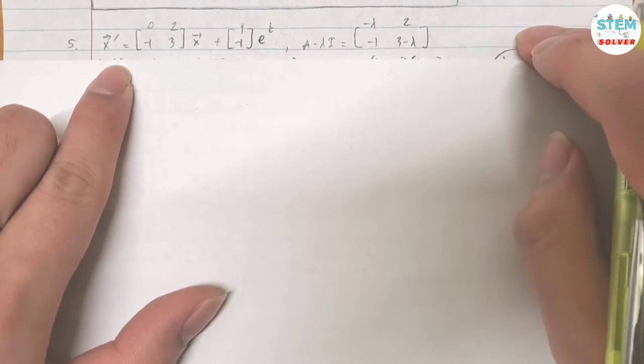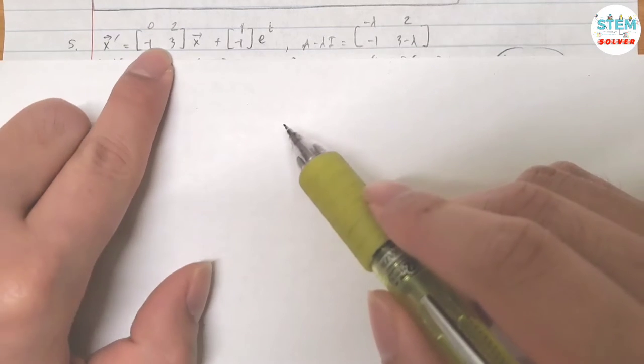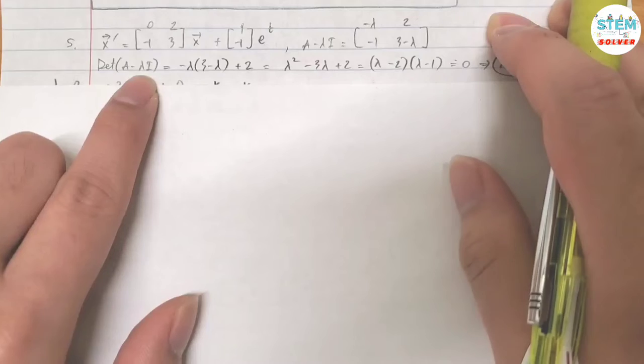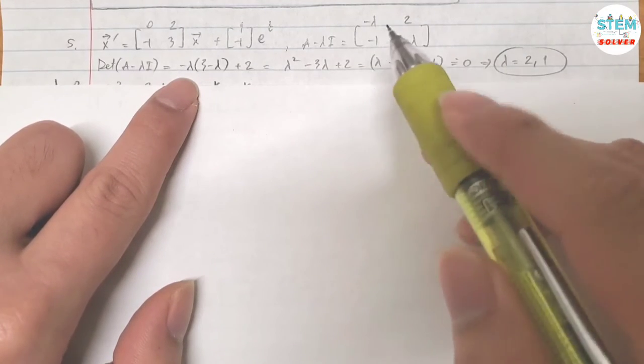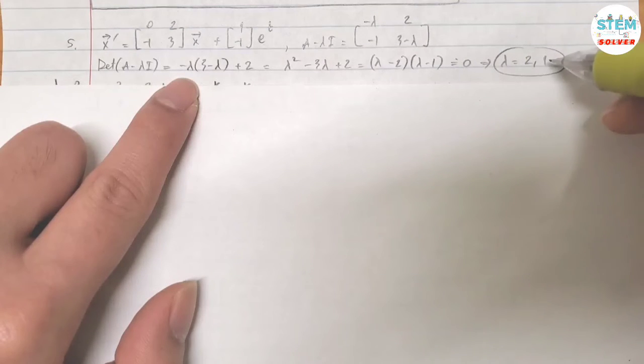First, finding the homogeneous solution. I need to have A-lambda-I. Let's call this matrix A. Then subtract it with lambda I. That gives me this matrix. Find the determinant of A-lambda-I. Simplify this, do a bunch of calculations, set this equal to 0. I figure out that lambda equals 2 and 1.